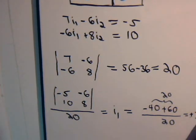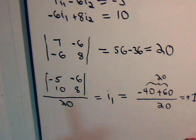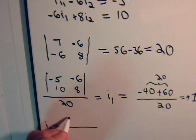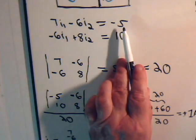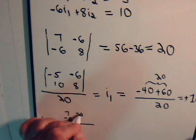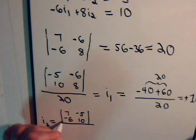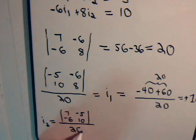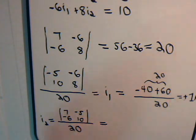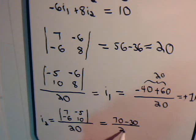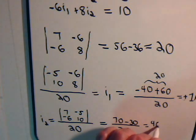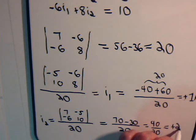Okay, let's see about I2. To determine I2, now, this was the I1 column here, that stays the same. But now, the I2 column, that gets replaced with these two numbers. So, we have minus 5 and 10, and this is divided by 20. So, this is equal to 70, minus plus 30, divided by 20. So, that equals 40 divided by 20, equals plus 2 amps.